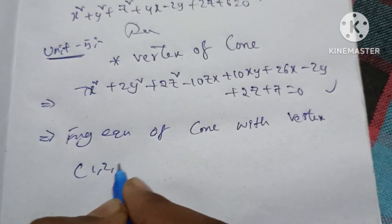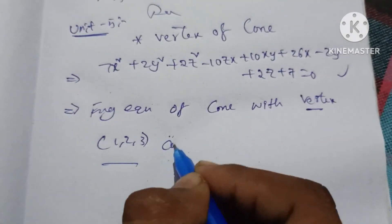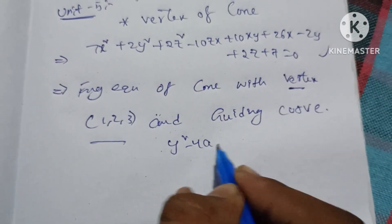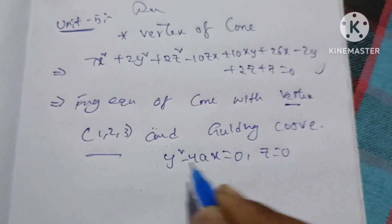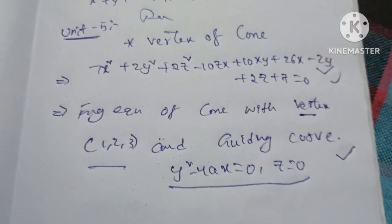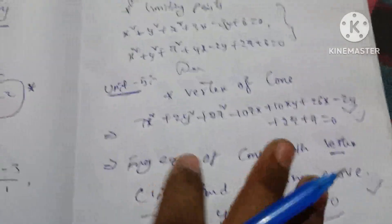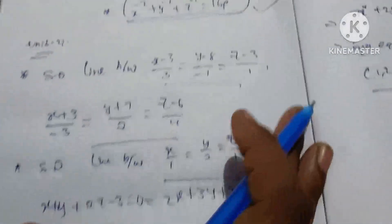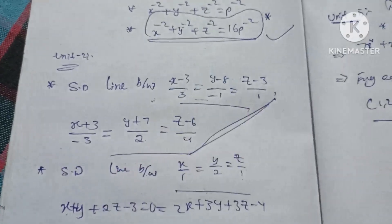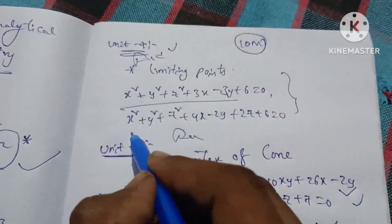I am showing you 50-plus marks questions. I will show you the past questions. You need to make a vertex and a guide for a vertex. This question is repeated again and again. You want to make a question from two given points.